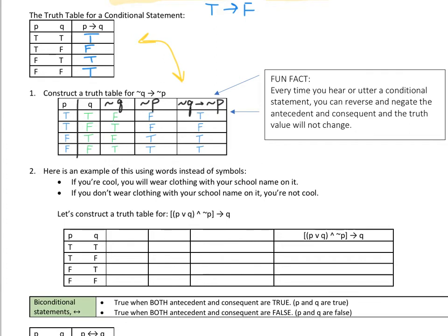Now I want you to fill out just this one row of the truth table before completing the whole thing. We have the entire quantity of P or Q, and ¬P implies Q. Whatever we're trying to find the truth value for is always in our last column. We need to break it up — pause the video, fill those three things out, and come back.